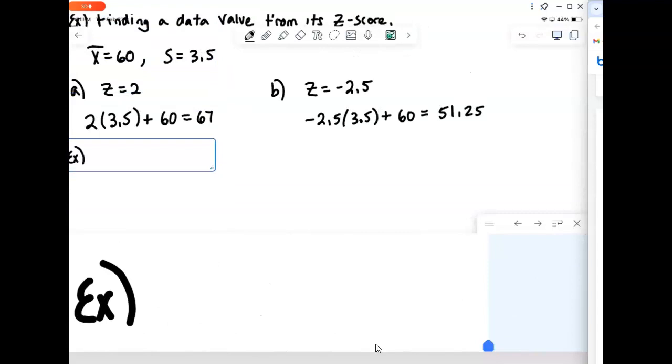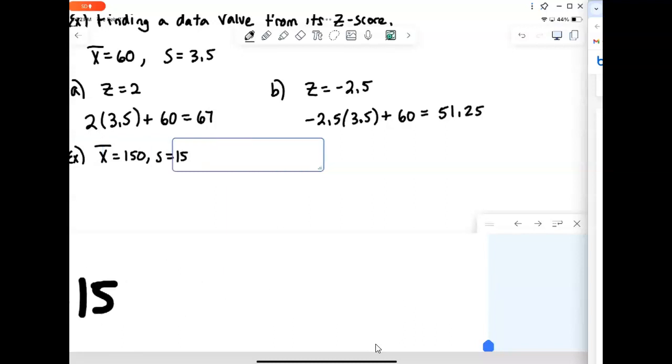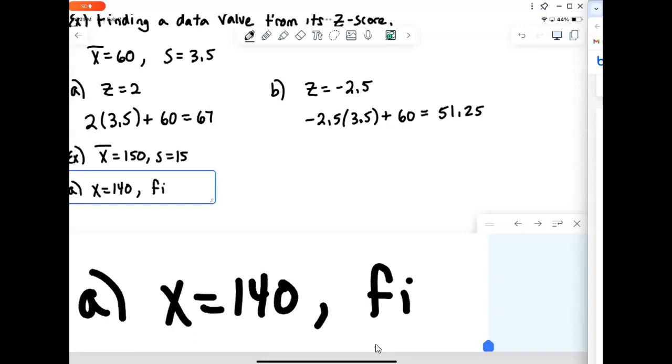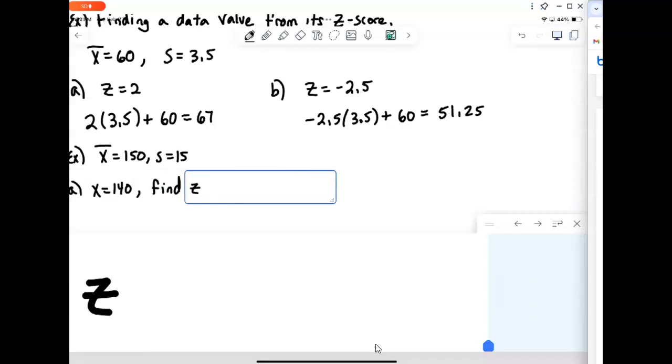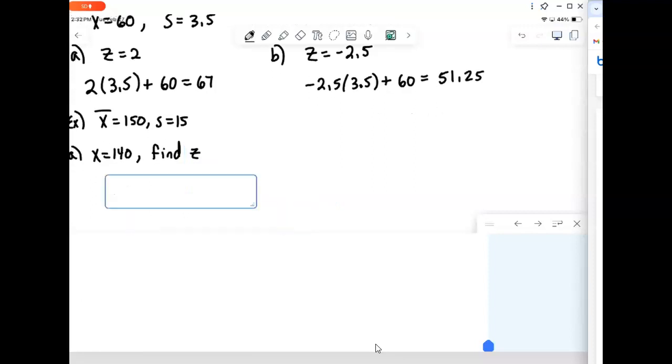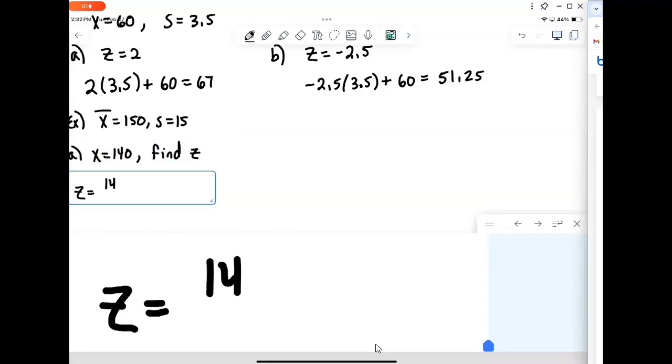Let's say that we have a mean of 150 with a standard deviation of 15. So in our first problem here, let's say that we know our data value is 140 and we want to find our z-score. z-score tells us where the data value is relative to the mean.